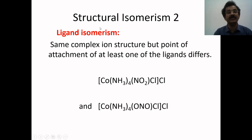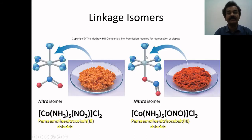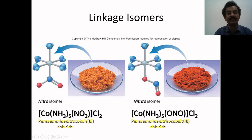Structural isomerism type 2 includes linkage isomerism. Here, the overall composition is the same and the ligand is also the same, but the donor atom in the ligand is different — this falls under ambidentate ligands. It can be illustrated using a ball-and-stick model. In the example pentamino-nitro-cobalt chloride, the nitrogen is directly linked with the metal ion. In the second complex, one oxygen is directly connected with the central metal ion cobalt. In both cases, the coordination number is 6. Since the donor atoms are different, the complexes also exhibit different colors in their solid form.